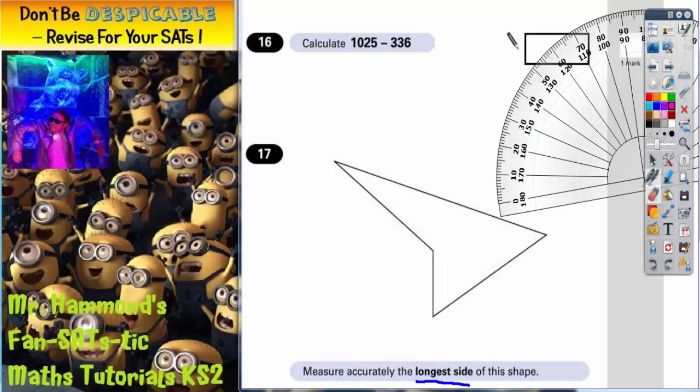We now need to measure the smallest angle in the shape. Now you should be able to tell that this is obtuse, so it's not going to be that one. These three angles are acute, and this one is actually the smallest one. So it's that angle that we need to measure. You should be able to tell that just by looking at it.